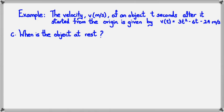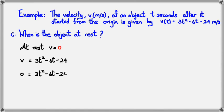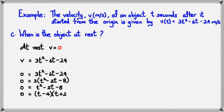When is the object at rest? Set v = 0: 3t² − 6t − 24 = 0. Dividing by 3 gives t² − 2t − 8 = 0. Factorizing: (t − 4)(t + 2) = 0, so t = 4 or t = −2. Since the object started from the origin and t must be greater than 0, the object comes to rest at t = 4 seconds.